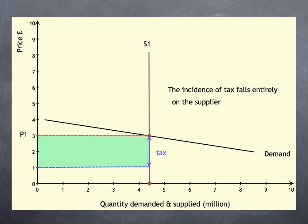But what if this time the supply and demand are both very elastic? What would happen to the tax revenue and the incidence of tax in this case?